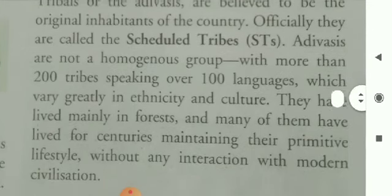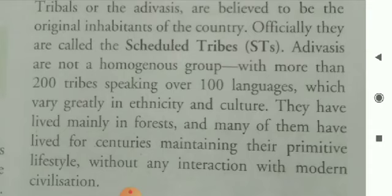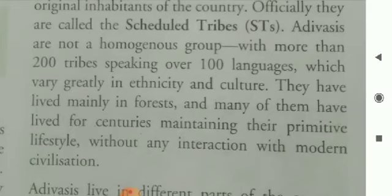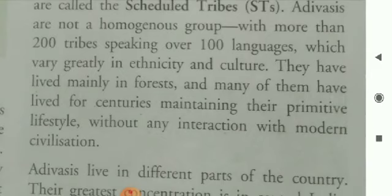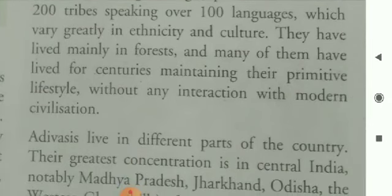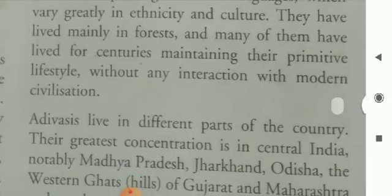However, there is confusion in this matter among other historians. Some believe that the Adivashis are the original inhabitants of the country. Officially, they are called the Scheduled Tribes or STs. Adivashis are not a homogenous group — with more than 200 tribes speaking over 100 languages, they vary greatly in ethnicity and culture.